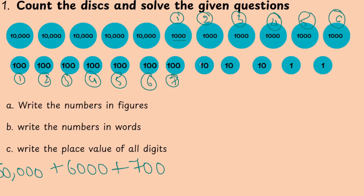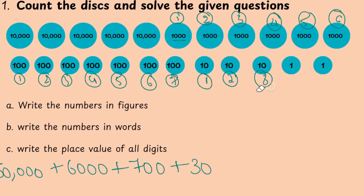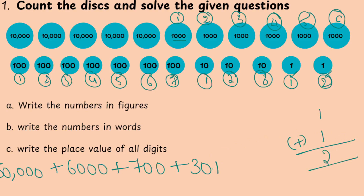How many tens are there? 1, 2, 3. Three tens are there. If you add three tens: 0 plus 0 plus 0 is 0, 1 plus 1 is 2, 2 plus 1 is 3. So the answer is 30. Finally, how many ones are there? 1, 1. You have two ones. 1 plus 1 is 2.